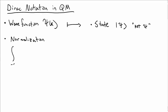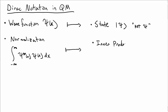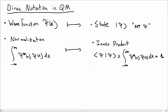Another central idea in quantum mechanics is the idea of normalization, so that psi star psi dx integrated from negative infinity to infinity must be one. For us we're going to use an inner product with Dirac notation. We're going to write bra psi ket psi and define that to be the integral from negative infinity to infinity of psi star psi dx. For normalized wave functions that should be one.